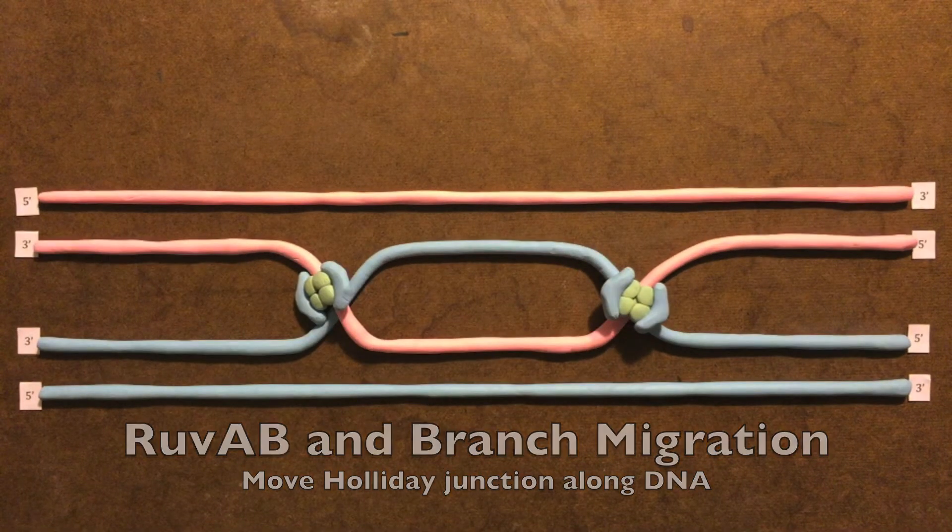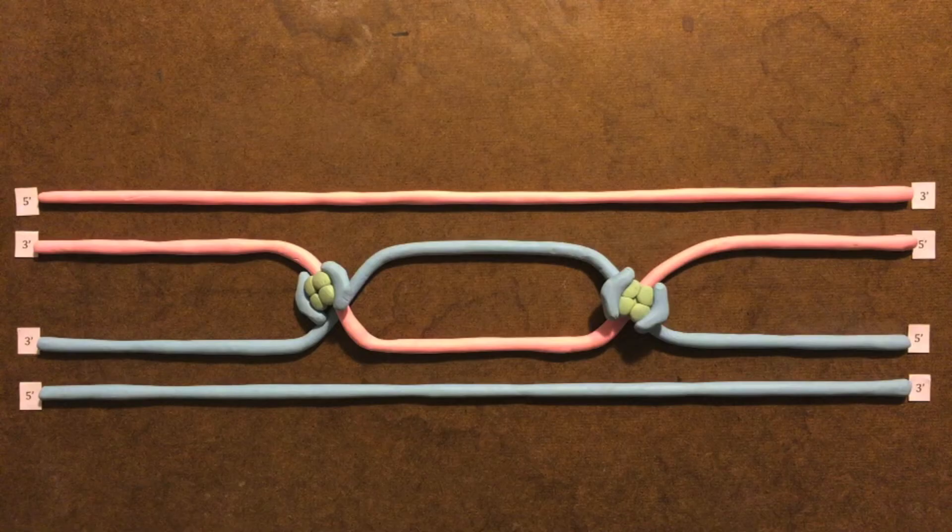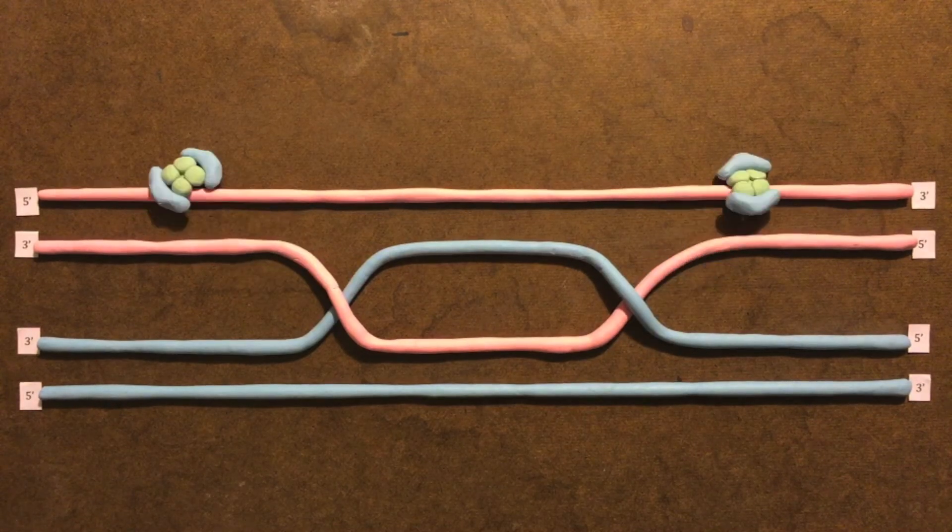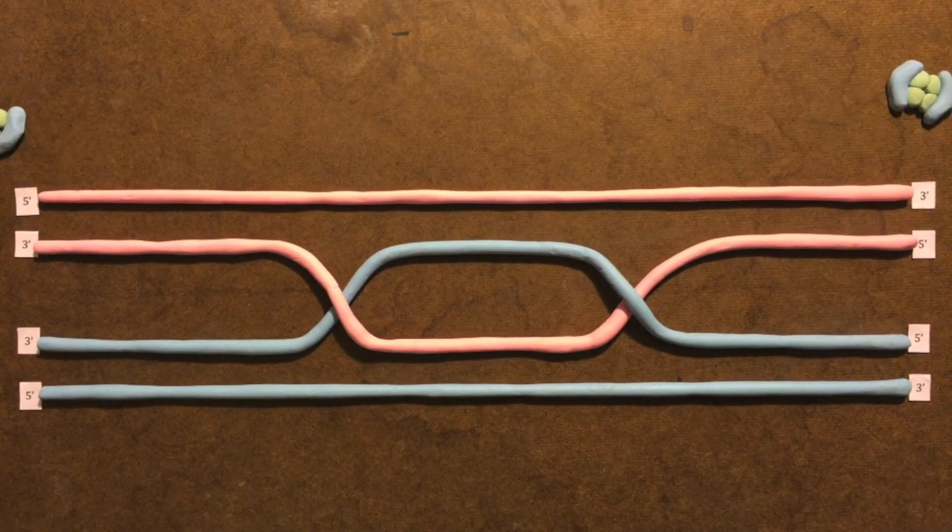Ruv-A is a site-specific binding, tetrameric protein of the holiday junction. It recognizes the junction and binds to it, then recruits Ruv-B. Ruv-B is a hexameric ATPase that supplies energy to the base pairs that migrate the DNA branch rapidly in a single direction.